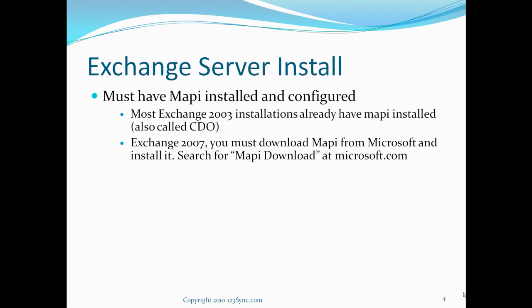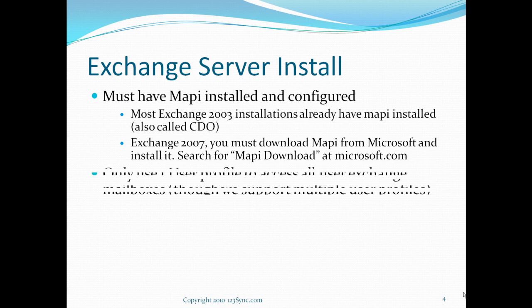On a Server Exchange, you have to have MAPI installed and configured. On most Exchange 2003 installations, MAPI is already installed, but in Exchange 2007, you must download MAPI from the Microsoft website. Go to Microsoft.com and search for MAPI download.